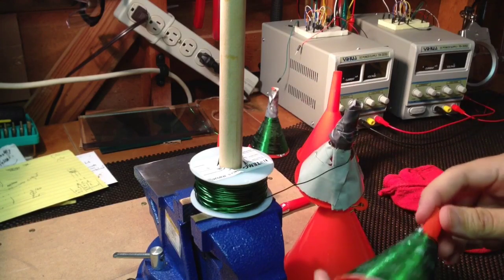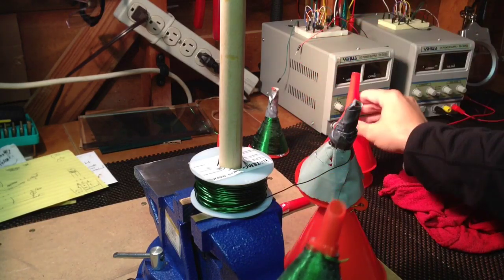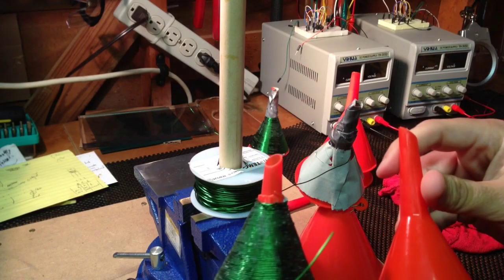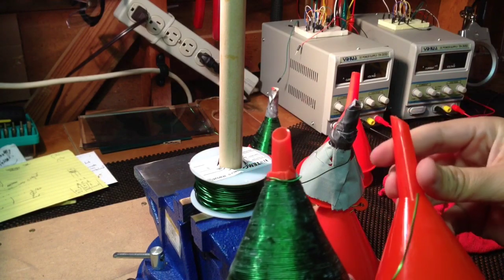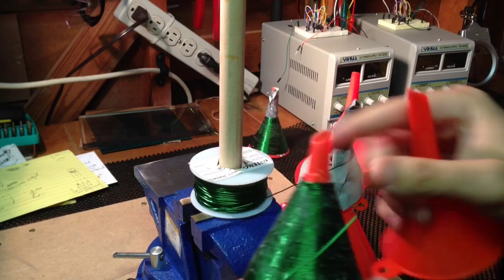I kind of just rigged this up but I'm basically winding these on some funnels that I found at Harbor Freight. They're basically this size here and I'm able to wind them in the conical direction here and get the cones that I want.